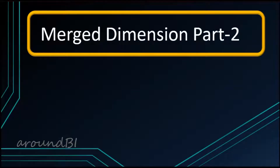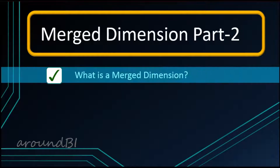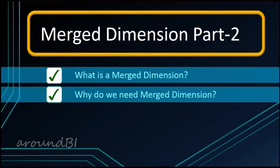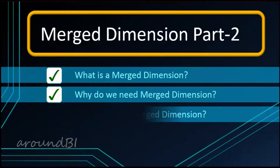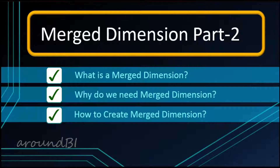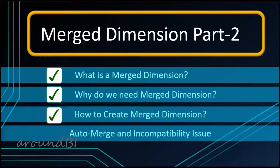Welcome to Around BI. This is part 2 of understanding Merge Dimensions. In part 1, we discussed what Merge Dimensions is, why we need it, and how we can create one. We also talked about the Auto Merge concept and the Incompatible Objects situation where we cannot drop objects from one query to a report block, along with a solution to resolve the incompatibility issue.